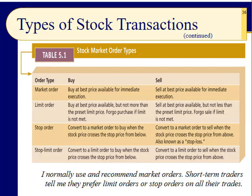The stop order is also called a stop loss, but it doesn't always protect you against a loss — it just means as soon as that price point is triggered, it becomes a market order, so you don't know exactly what you'll get. Whereas the stop-limit order, once it hits the trigger, becomes a limit order, meaning you know you'll get that price if you get it — but you might not get it. I really don't use them, so my advice: want to buy? Market order. Want to sell? Market order. Don't drive yourself nuts.